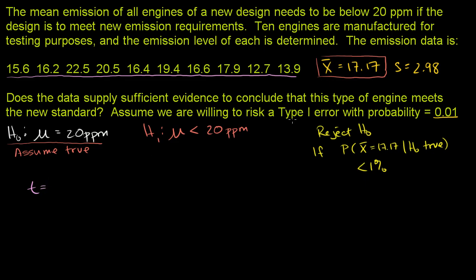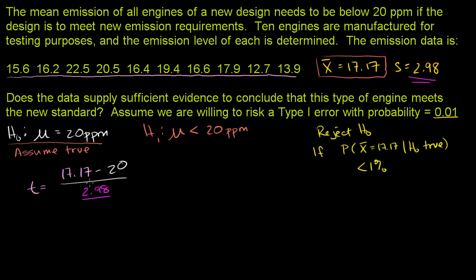The t-statistic is going to be our sample mean, 17.17, minus the assumed population mean of 20 parts per million, divided by our sample standard deviation of 2.98, divided by the square root of our sample size of 10. This is the definition of the t-statistic, which comes from a z-score concept, with the t-distribution being an engineered version of the normal distribution.